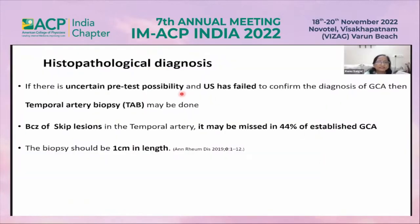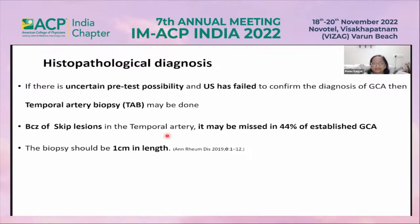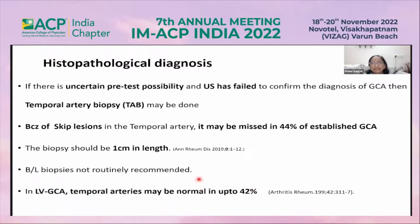Histopathological diagnosis is done only when there is uncertain pre-test probability and ultrasound has failed to confirm the diagnosis of giant cell arteritis. Biopsy of the temporal arteries should be performed; because of skip lesions, it may be missed in up to 44% of established cases. The biopsy should be at least one centimeter in length. Bilateral biopsy is not routinely recommended, but can be done if one side is negative with strong clinical suspicion. In large vessel GCA, temporal arteries may be normal in up to 42% of patients.